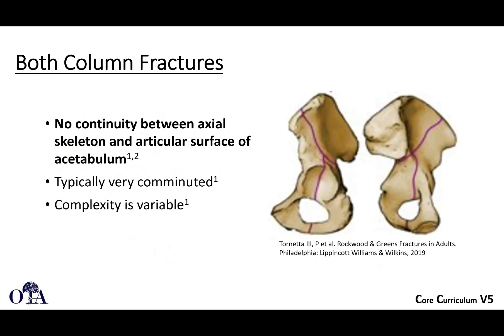The associated both-column fracture is defined as a fracture where there's no continuity between the axial skeleton and the articular surface of the acetabulum. It's typically very comminuted and can be fairly complex. This is the equivalent of the AO type C periarticular fracture, where all articular fragments are dissociated from the shaft — in this case, the sciatic buttress. Transverse, T-shaped, transverse posterior wall, and anterior column posterior hemitransverse all involve both columns, but none of them are an associated both-column fracture where all articular fragments are dissociated from that sciatic buttress.